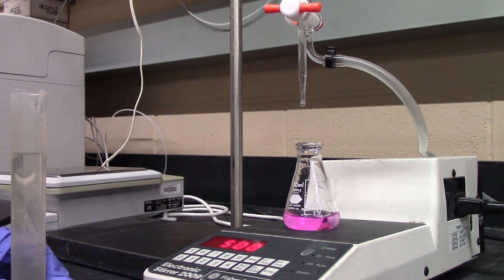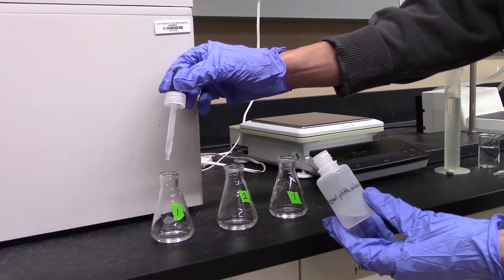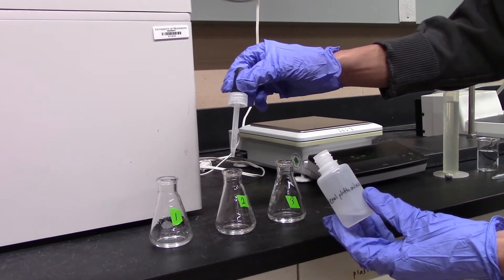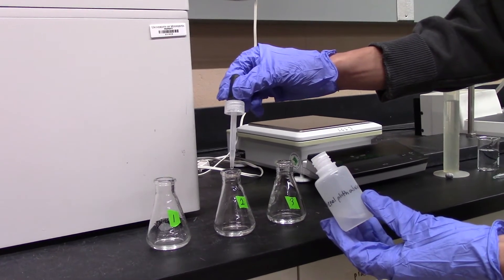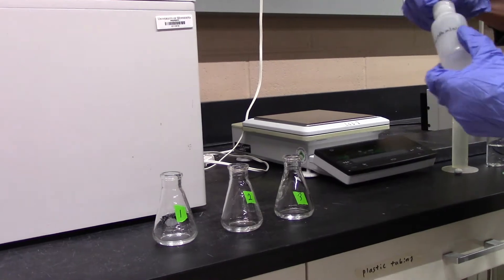This same standardization process should also be conducted for HCl. Furthermore, set aside several Erlenmeyer flasks, each containing 5ml of HCl and a drop of phenolphthalein, as these will later on be used for the quenching process.